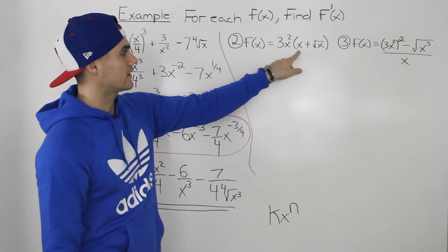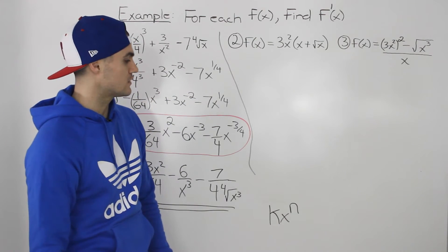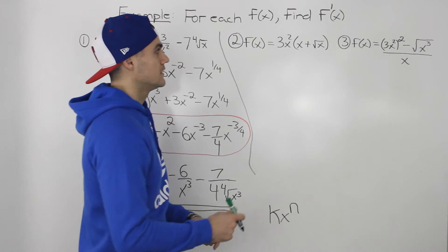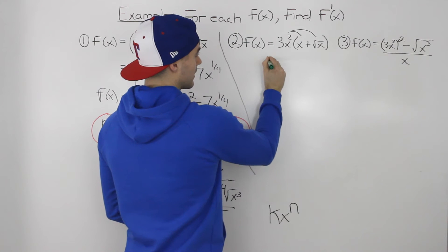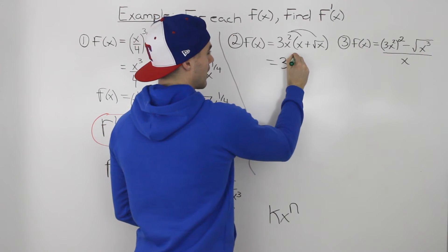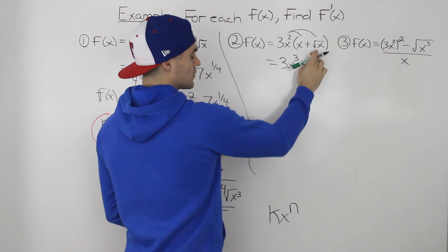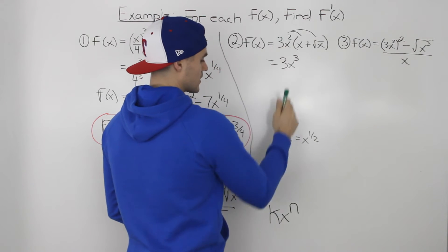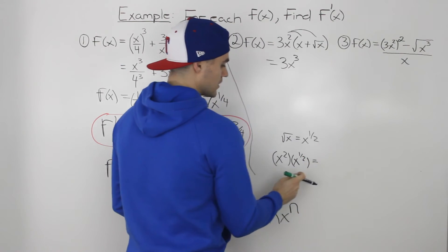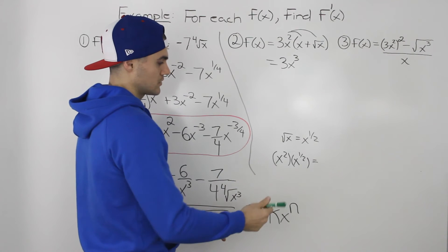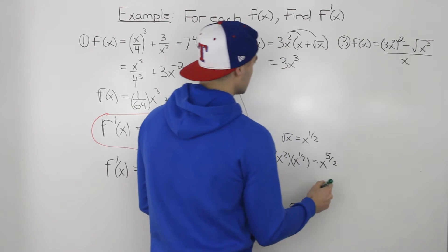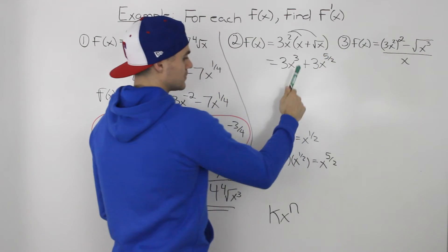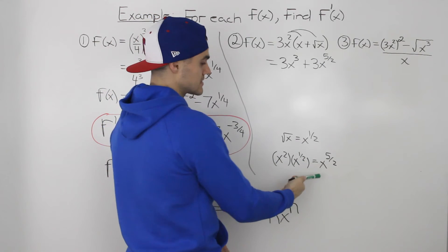Moving on to the second example: f(x) = 3x²(x + √x). Let's distribute the 3x² inside the bracket. 3x² times x gives 3x³. For 3x² times √x: the square root of x equals x^(1/2), and x² times x^(1/2) means adding the exponents — 2 plus 1/2 gives 5/2. So that term becomes 3x^(5/2). The function is now 3x³ + 3x^(5/2), with every term in the standard format.